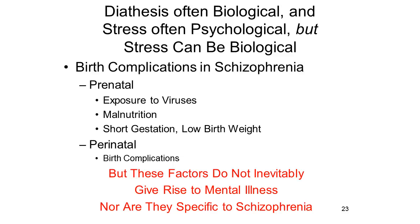But it would be a mistake to identify diathesis with biology and stress with the environment. Not least because there are some stressors which are really biological in nature. For example, adults with schizophrenia often have a history of prenatal and perinatal complications — they were products of a difficult pregnancy or a difficult birth. These events constitute stressors, but they're really biological stressors. By themselves, they're not enough to cause schizophrenia, but these kinds of biological factors can interact with a genetic diathesis to lead an individual to develop schizophrenia as an adult.